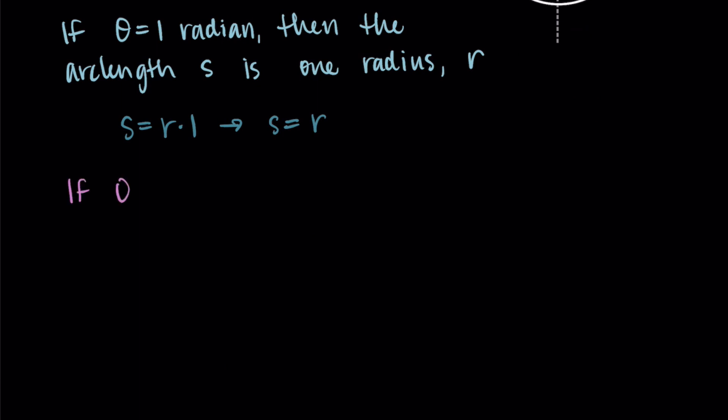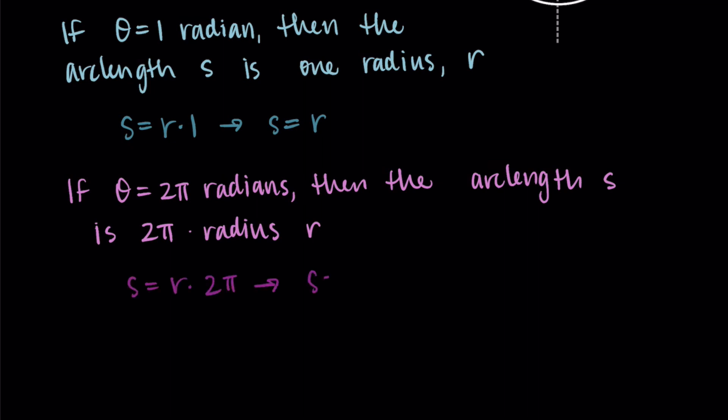And the same thing then holds for the other angles. So if we have theta is two pi radians, then the arc length is going to be two pi of that radius, we're going to do the radius two pi times, since we're doing two pi radians instead of one radian. So we would just take the radius times how many radians we're doing, right? So r times two pi, and we get two pi r. And this here is our formula for the circumference of a circle that you've maybe seen before. So this arc length formula also relates back to that.